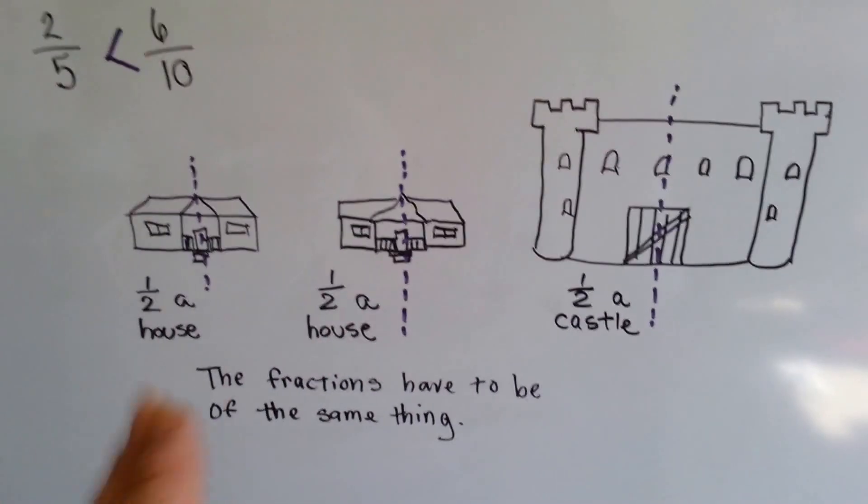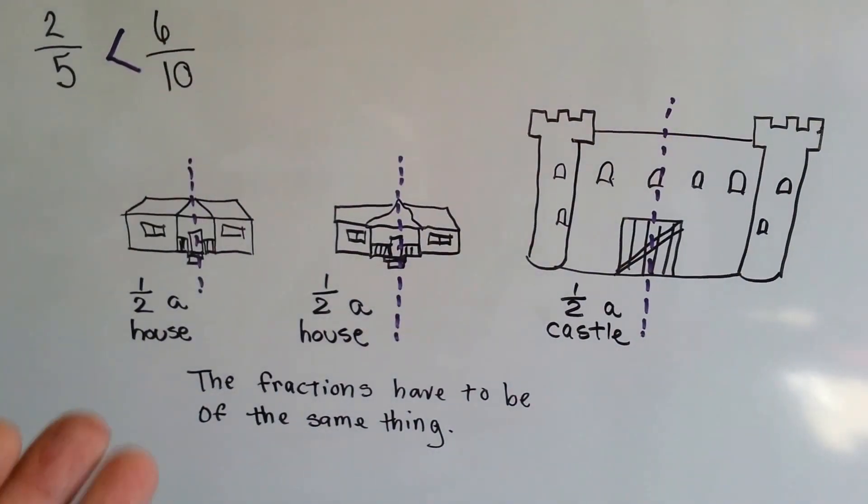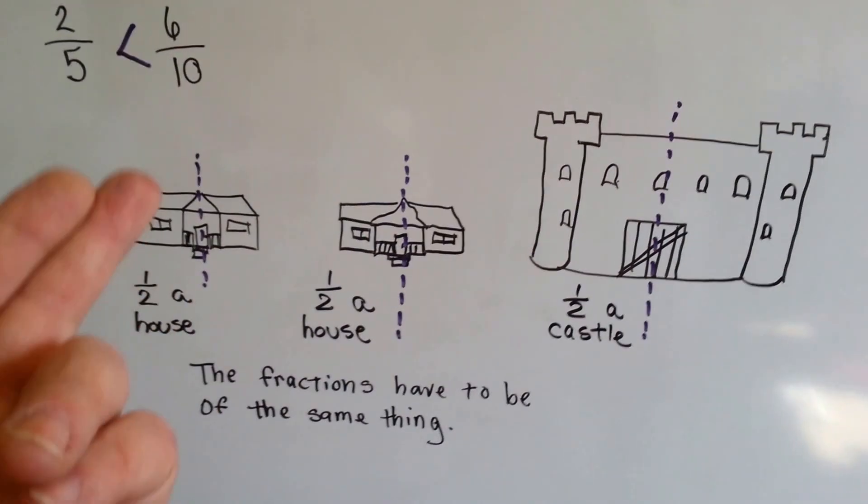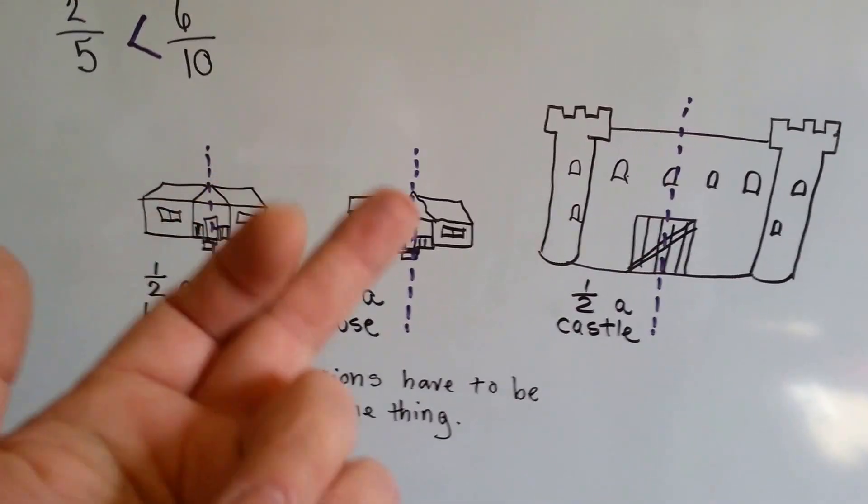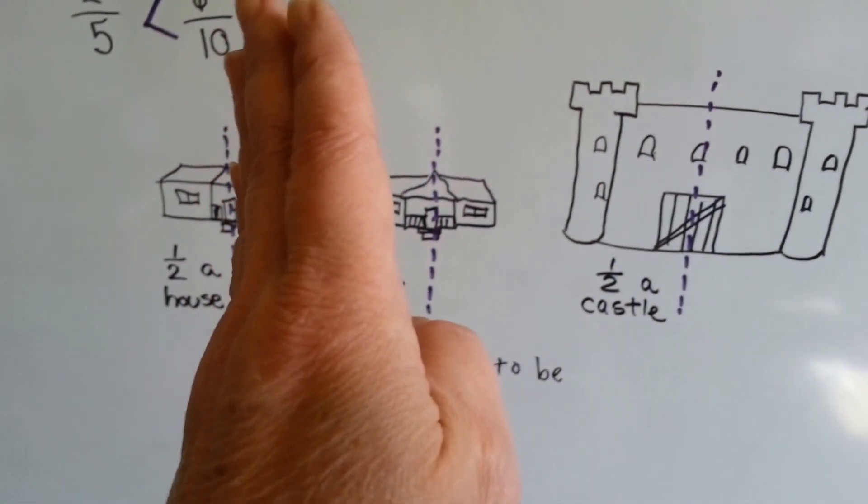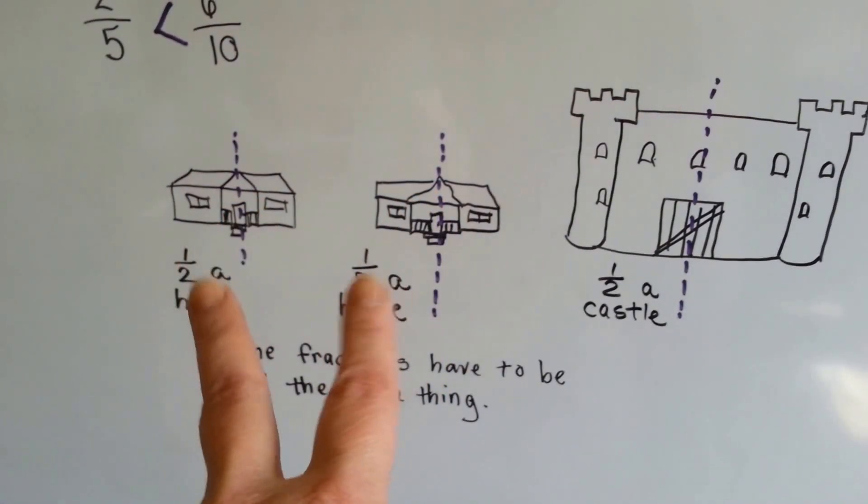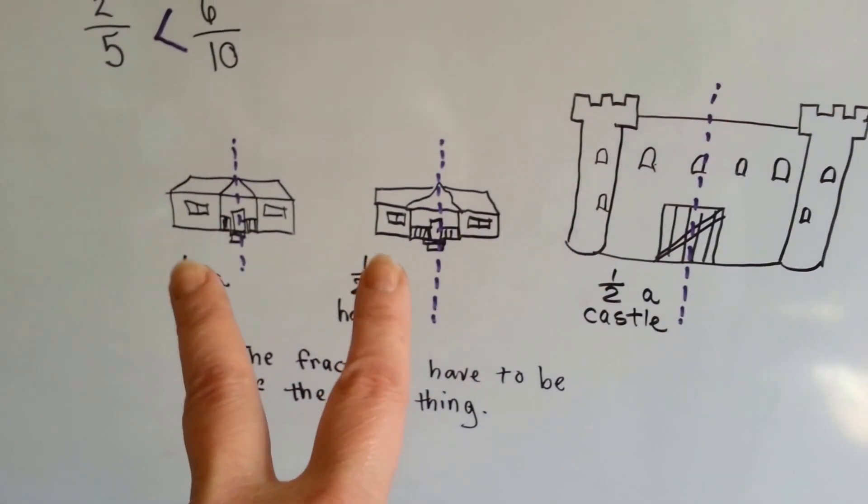What if someone said, I'm going to let you own half my house and live in half my house? If the two houses were like this, then you could say, yeah, half the house is the same as half a house. Because the houses are the same. These are both half of the same size house.